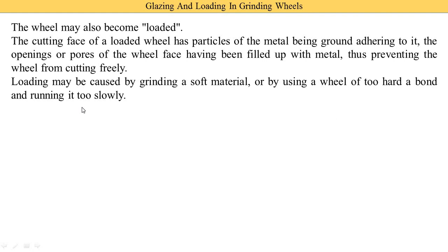If we run the grinding wheel at too slow a speed, loading occurs. Both glazing and loading are disadvantages of the grinding wheel — we want neither. So we require an optimum speed. If we run at high speed, glazing occurs; if we run at low speed, loading occurs. Both are undesirable, so we require an optimum speed for the grinding wheel.